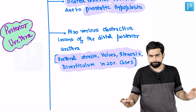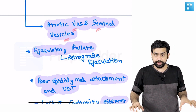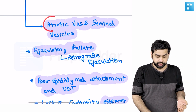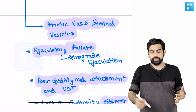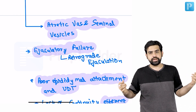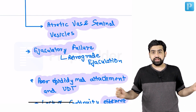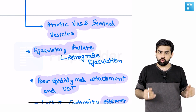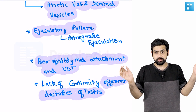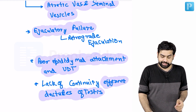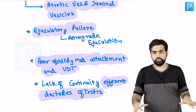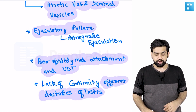The vas deferens and seminal vesicles entering the prostatic urethra are also atretic. Consequently, patients may have ejaculatory failure or retrograde ejaculation, because the bladder neck fails to close properly in Prune Belly Syndrome. There can also be poor epididymal attachment, undescended testes, and lack of continuity of the efferent ductules, all contributing to potential infertility.